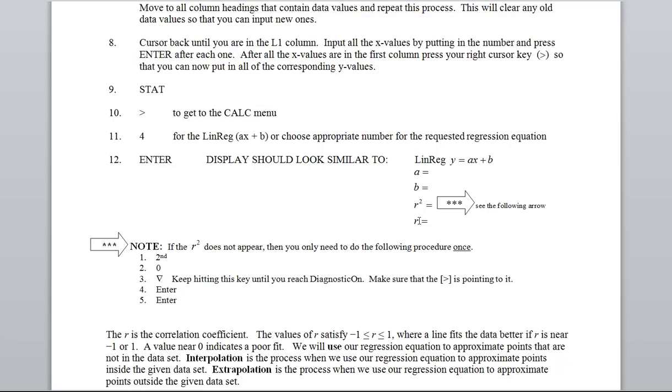Now the r that's referred to right here is called the correlation coefficient. The values of r satisfy where r is between and including negative one and one. Where a line fits the data better if r is near negative one or one. Actually if you come up with an r value of one or negative one it's a perfect fit. A value for r near zero indicates a poor fit and don't use it to try and find other values. We will use our regression equation to approximate points that are not in the data set. So interpolation is the process when we use our regression equation to approximate points inside the given set and extrapolation is the process when we use our regression equation to approximate points outside the given data set.